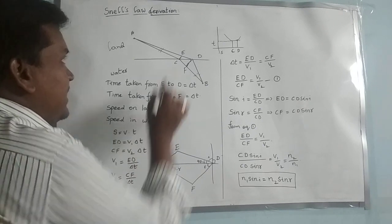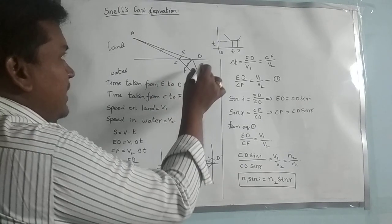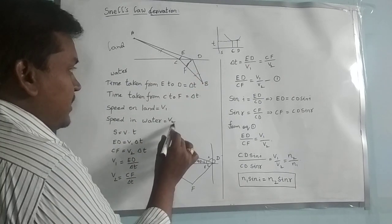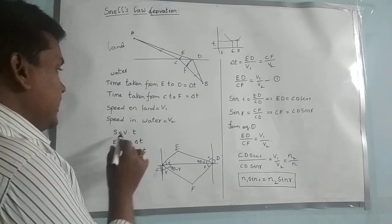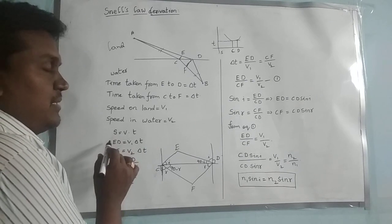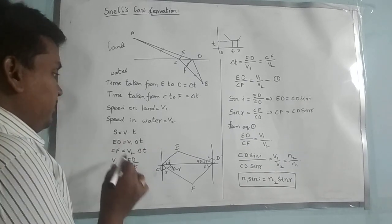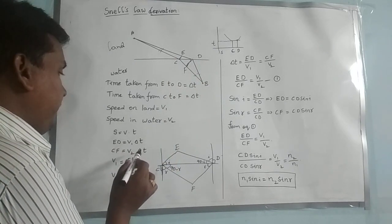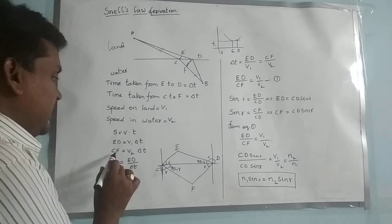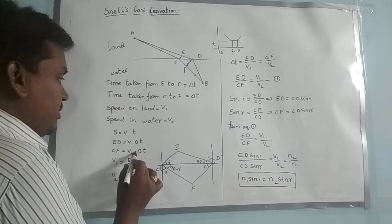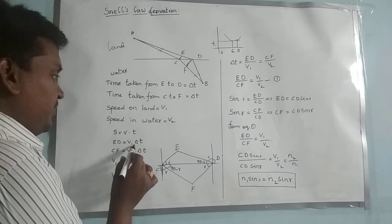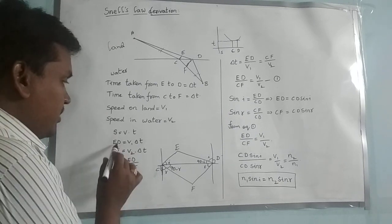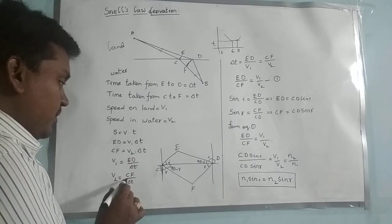The speed on land is considered as V1 and the speed in water is considered as V2. We know that distance S equals speed into time. So the distance ED equals V1 into delta T. In the same way, the distance CF equals V2 into delta T. So we can write: V1 equals ED by delta T and V2 equals CF by delta T.